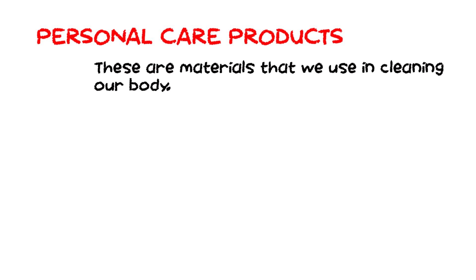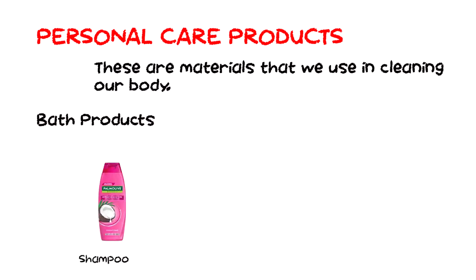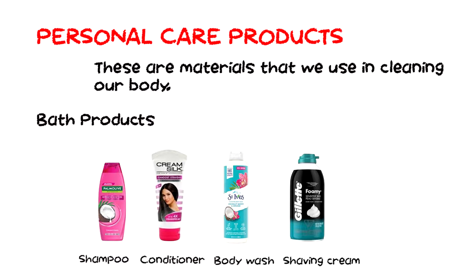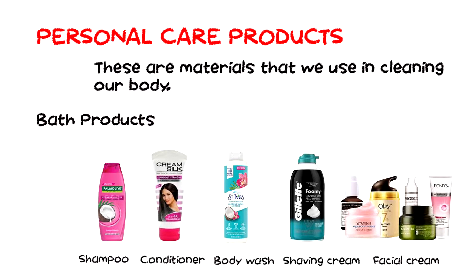Now what are the materials found in the environment? We have personal care products. These are materials that we use in cleaning our body. It includes, number one, bath products. Examples are shampoo, conditioner, body wash, shaving cream, and facial cream.